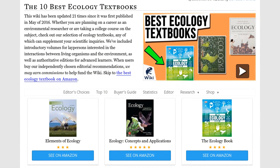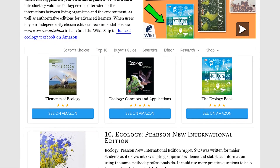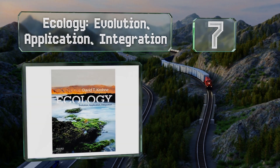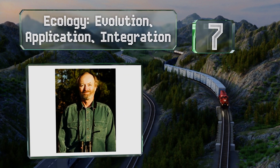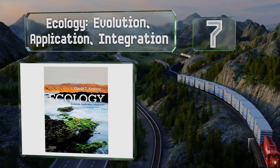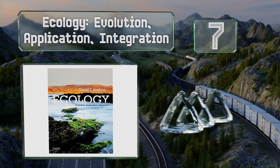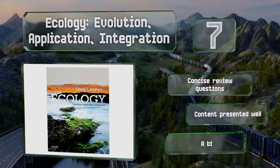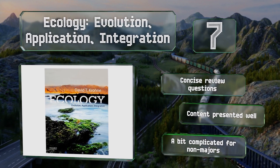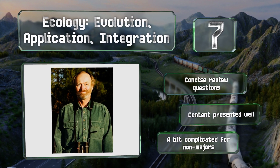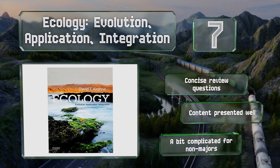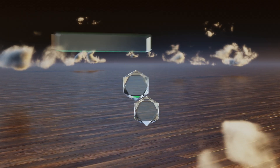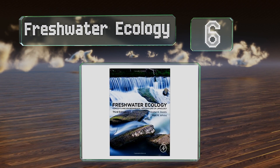At number 7, developing student scientific reasoning skills is one of the main goals of Ecology: Evolution, Application, Integration, along with encouraging readers to understand the ecological issues of today in an evolutionary context. The writing is informative but not dense, it includes concise review questions, and the contents are presented well, but it might be a bit complicated for non-majors.